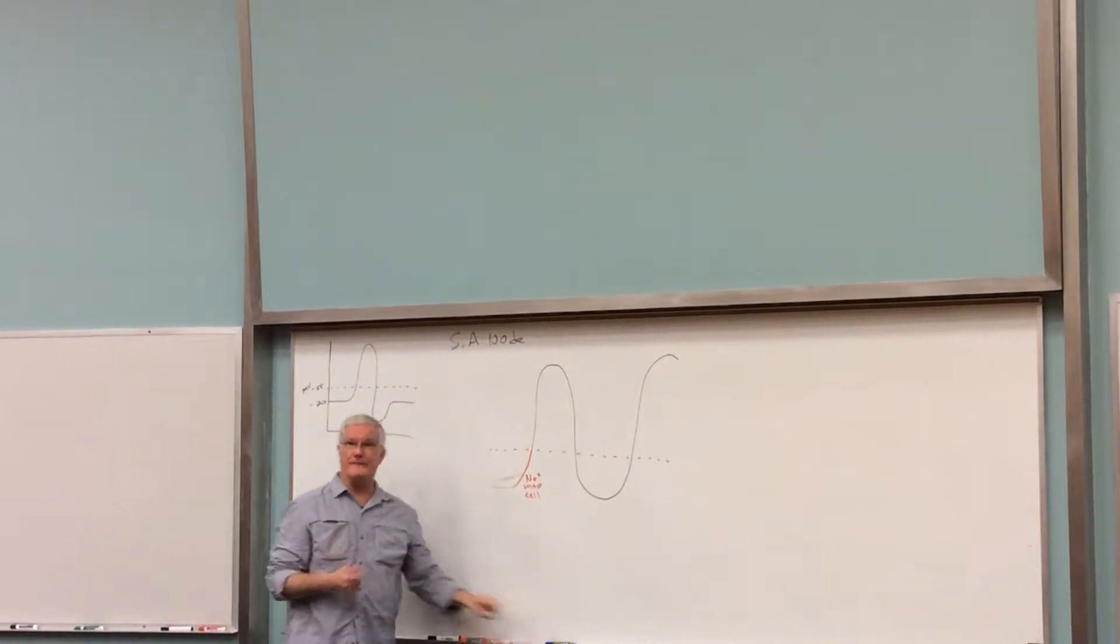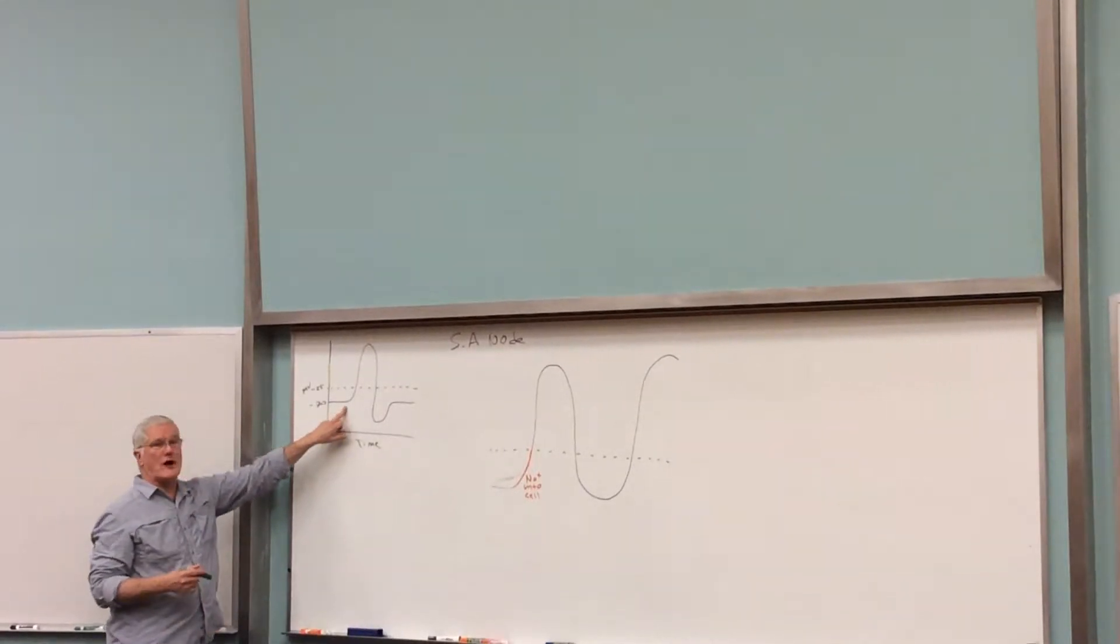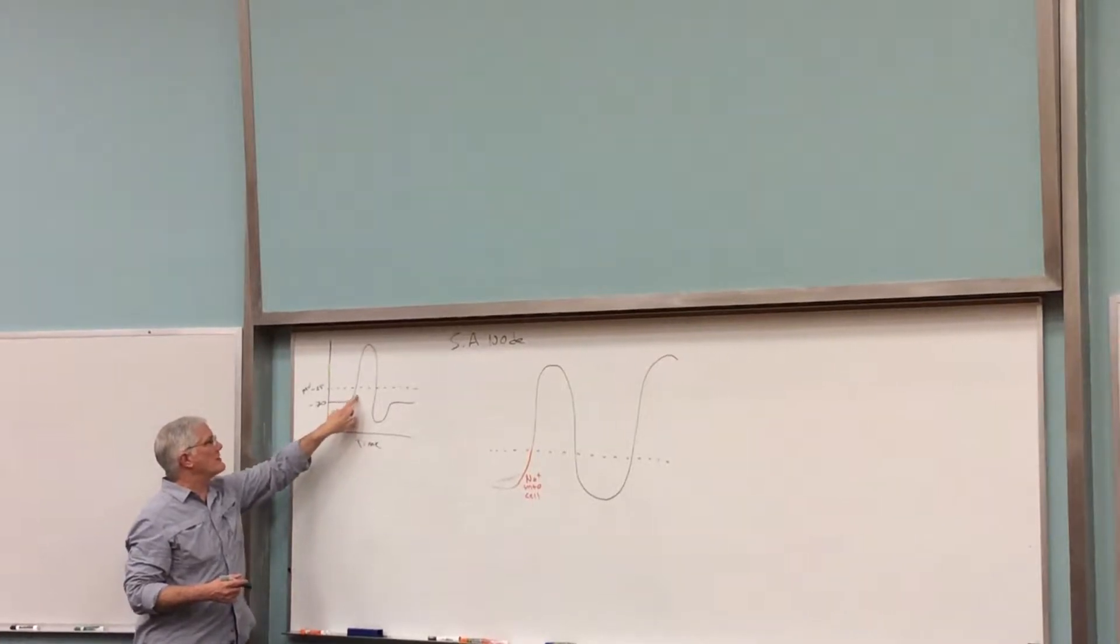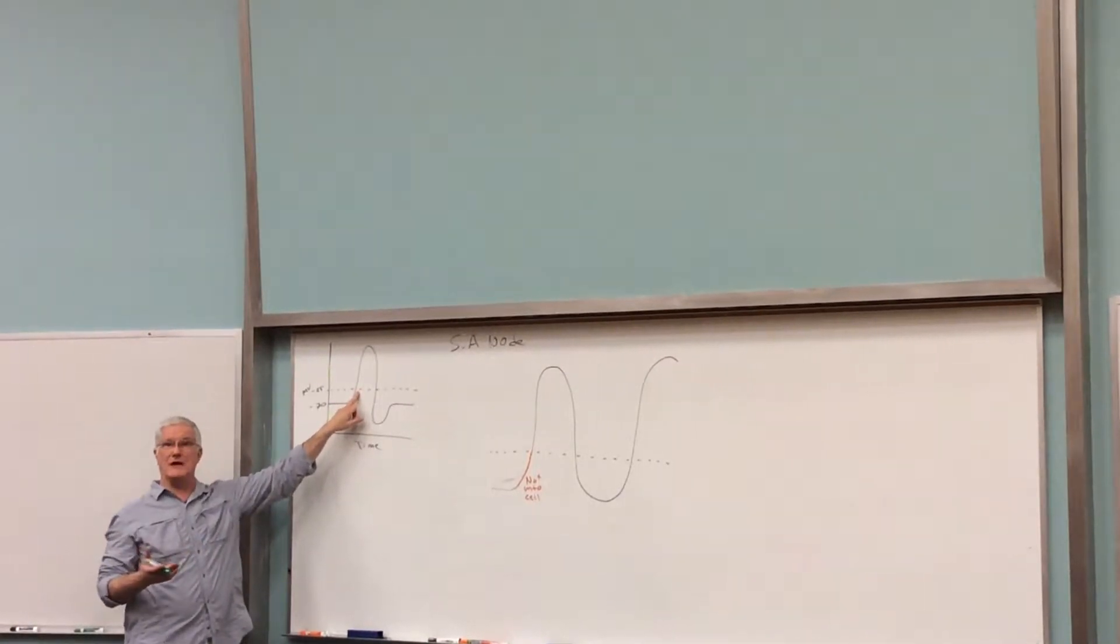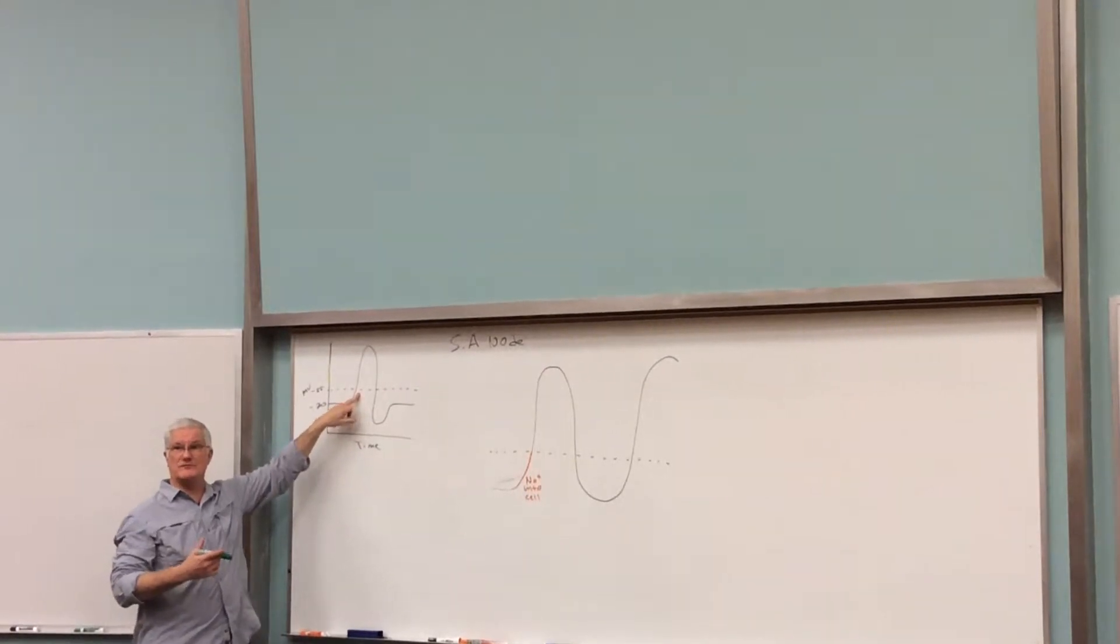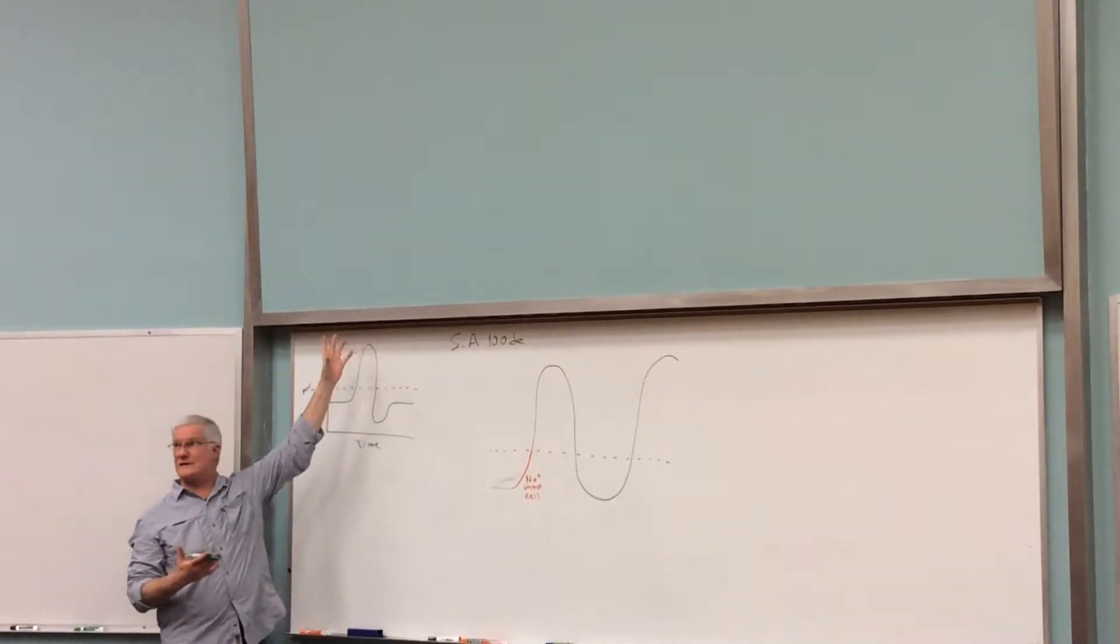Now, this is what's different. In a neuron or skeletal muscle, when we brought the membrane towards threshold, usually because of sodium ions, we opened up voltage-gated sodium channels. It becomes rushing into the cell, making for a rapid depolarization.